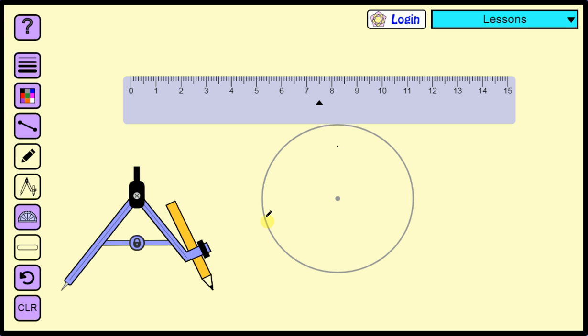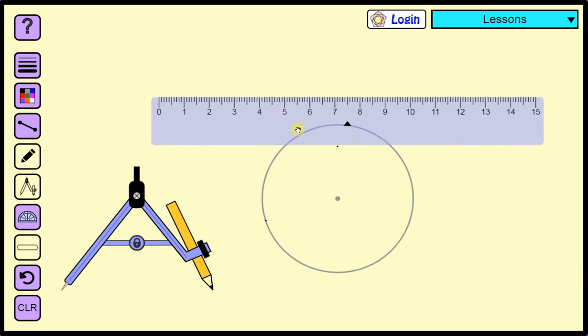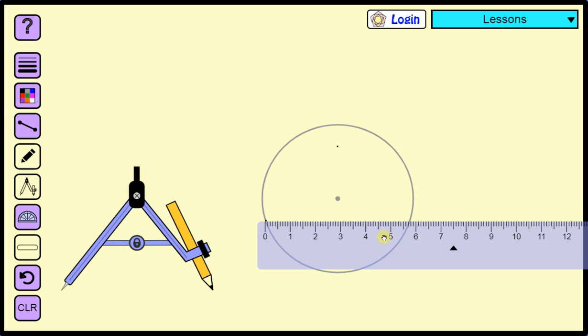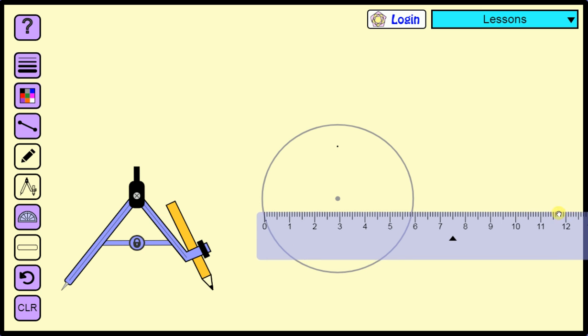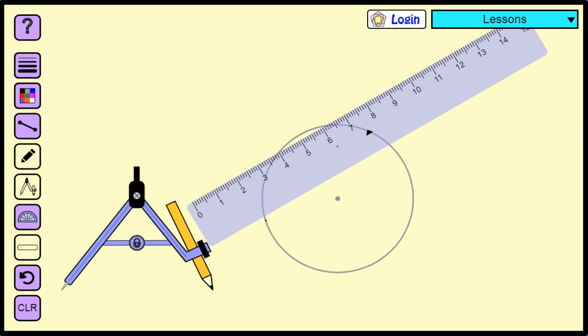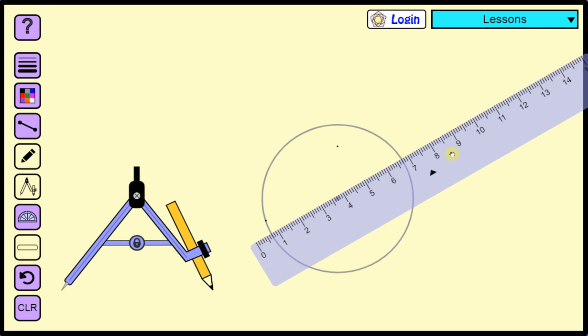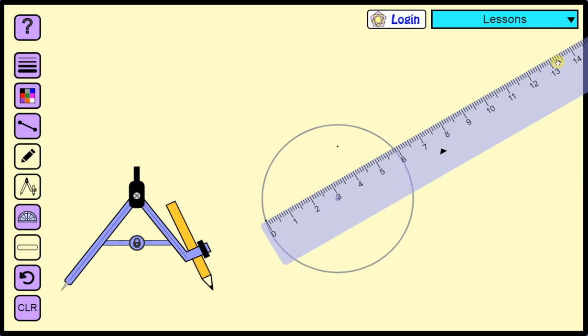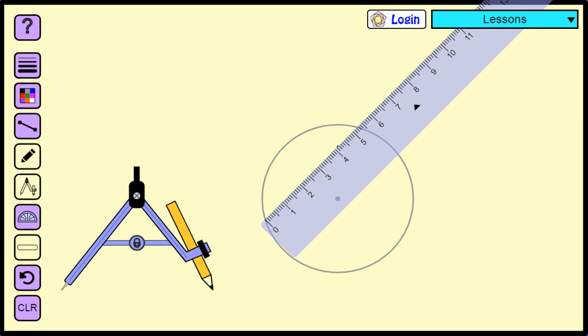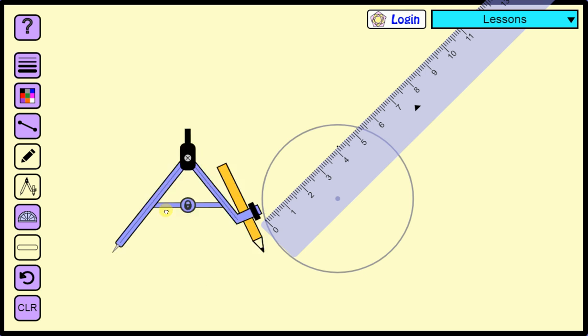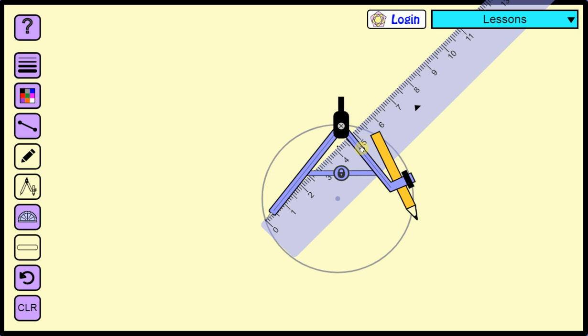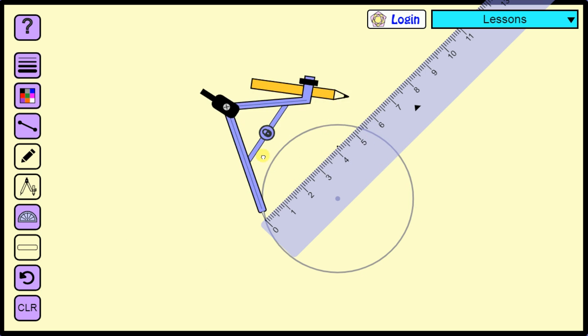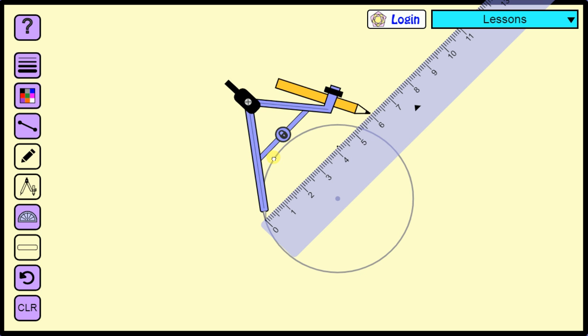Okay, so we're going to start off with this point here. Now you could use the straight line tool, but I'm just going to put the ruler along it. Rotation from that point. Make sure it goes through that point. And what you should do is put your compasses on one end, rotate round, and put a mark where it touches the ruler.